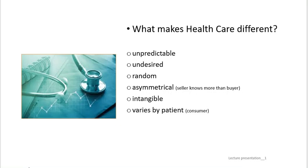Additional differences include: A, there is an insurable risk associated, meaning there is almost always a third-party payer — insurance; and B, the government can intervene. As we will discuss more in-depth moving forward, society views health care as a right, and thus the government can and does step in.